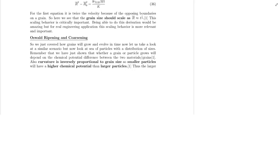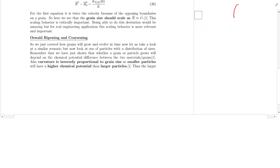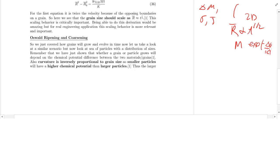Today we're going to wrap up lecture six on nucleation and growth and Oswald ripening. So far we've dealt with how a system will evolve when we have a curved interface, and we went to these 2D grain structures. We looked at the change in chemical potential from a stress perspective and a flux perspective. We also figured out 2D grain growth — the average grain size scales as T to the one-half, with our M parameter having an exponential inverse relationship with temperature. We had the von Neumann principle, where N equals six determines if grains will grow, shrink, or stay the same.